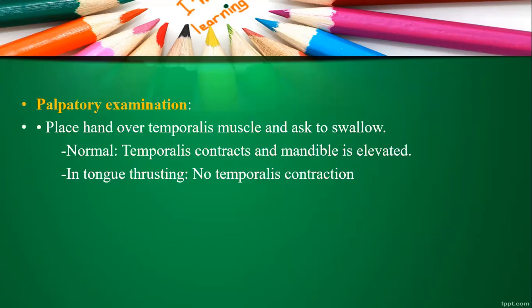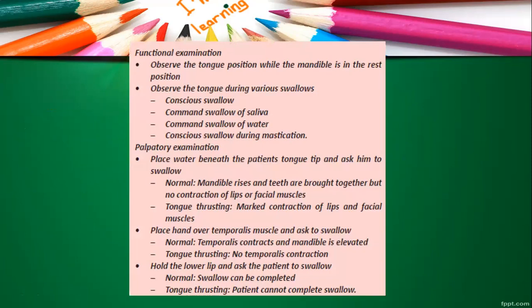Under palpatory examination, one technique is placing your hand over the temporalis muscle and asking the patient to swallow. In a normal condition, the temporalis contracts and the mandible is elevated. In a tongue thrust habit, when the patient is asked to swallow, there will be no temporalis contraction. These are the key points to note when functionally examining and identifying tongue thrust in a patient.